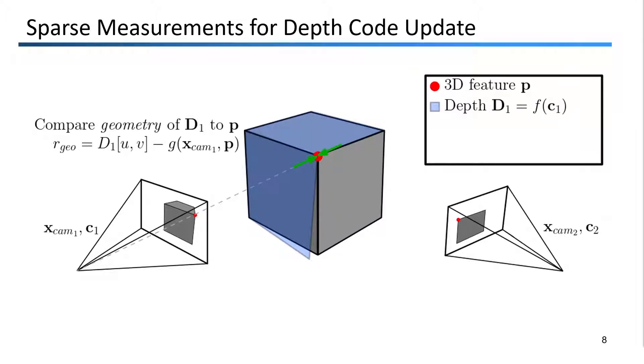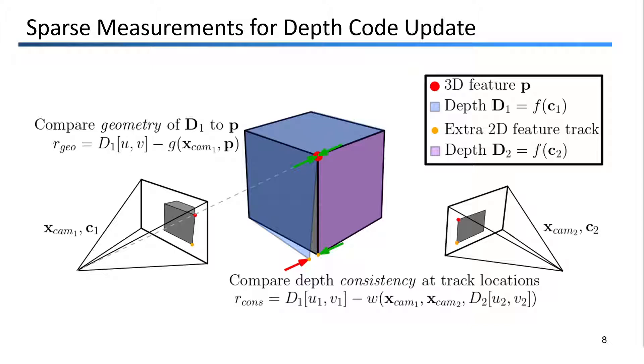It is relatively inexpensive to track a large number of features that won't get triangulated and processed for reprojection error. To this end, we track a larger number of features than we will process for the previous updates, and we use these extra 2D correspondences to compare the consistency of the depth maps from multiple views by projecting the depths from one frame into the other. This constrains the depth maps to be stitched together well.